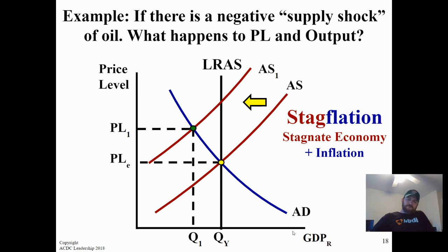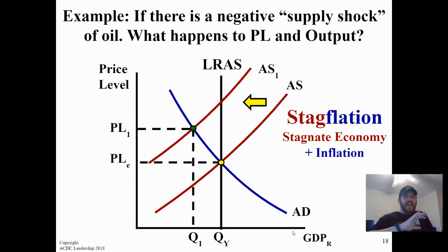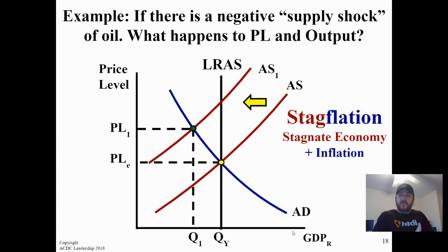Anytime we interfere in the economy to fix these gaps — through fiscal policy or Federal Reserve monetary policy — there is a tradeoff and an opportunity cost. If you fix unemployment, you get a little inflation; if you fix inflation, you get a little unemployment. In a stagflated economy, there's no winner. You have to decide: are prices going to get worse, or are more people going to lose their jobs?